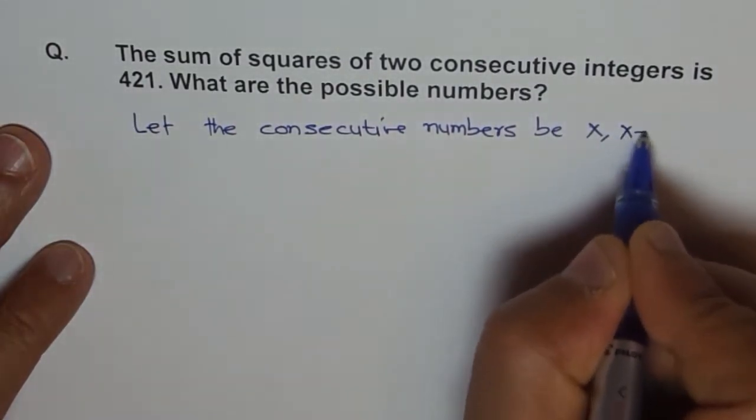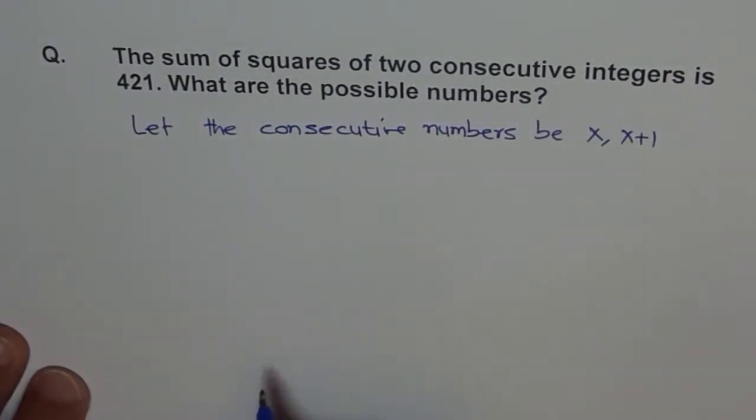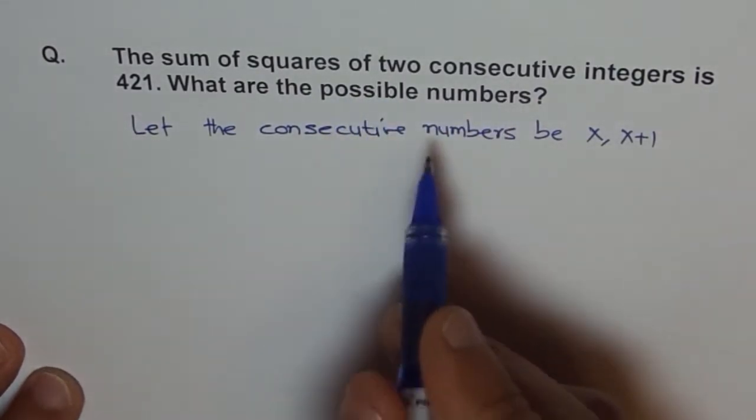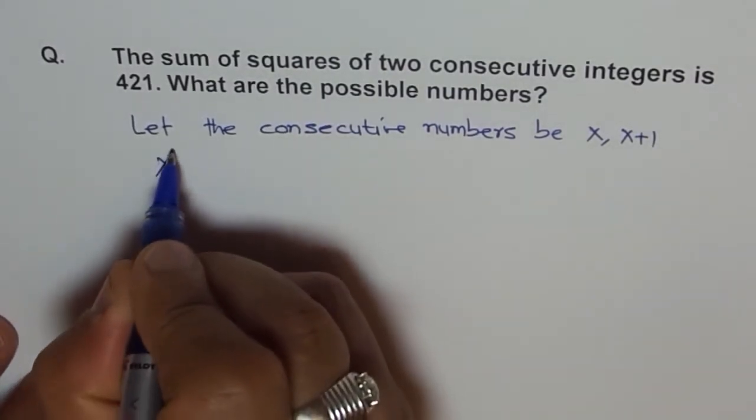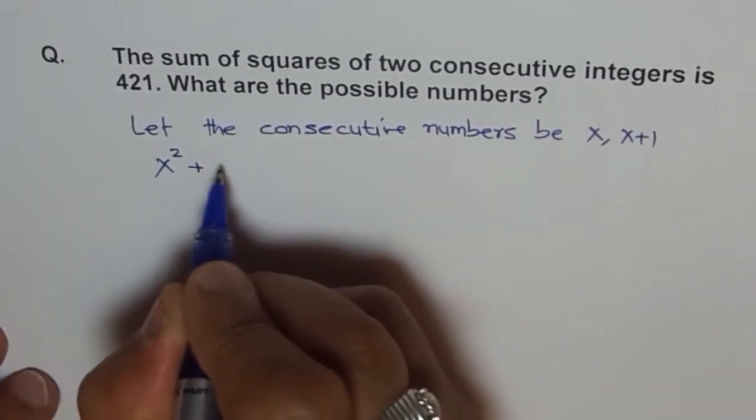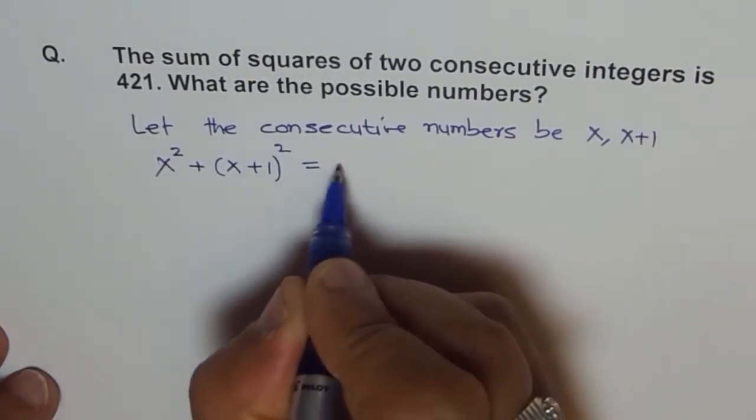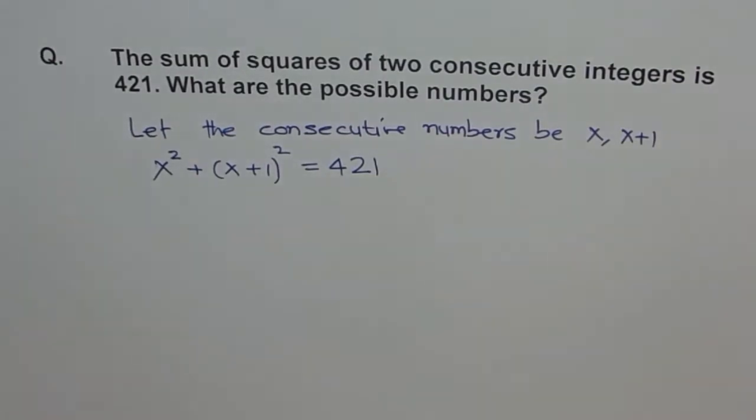These are your consecutive numbers. Now this is sum of squares of two consecutive, so their squares sum is 421. So the equation here is X² plus (X+1)² equals 421. That is the equation which represents our problem and we can now solve it.